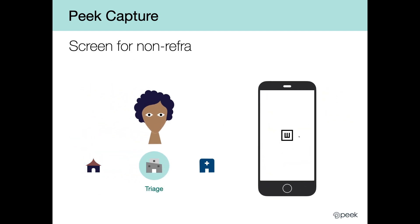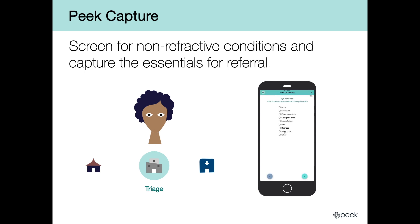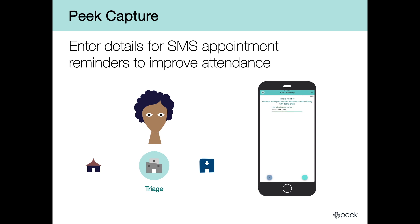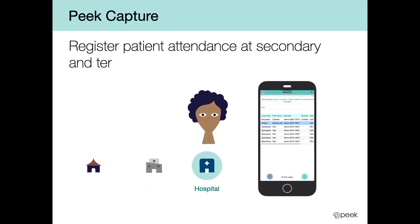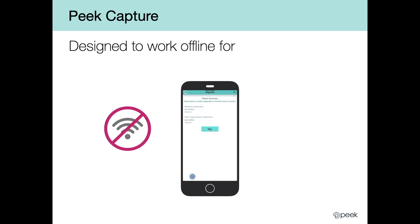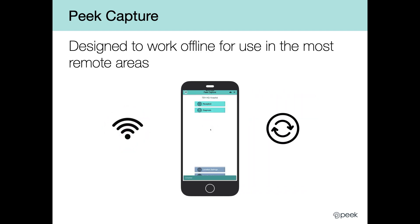Screeners can also use the app to screen for non-refractive eye conditions and capture the necessary patient details for referral. For patients found to have an eye condition, the app is used to enter their details for SMS appointment reminders in order to improve attendance and register patient attendance at secondary and tertiary services. This app is designed to work offline and to sync data when online, making it suitable for use even in the most remote areas.